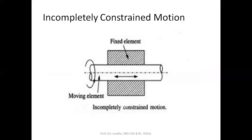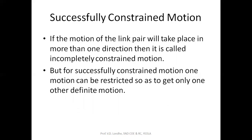Second is incompletely constrained motion. Here there is a shaft (moving element) and a fixed element. As the shaft rotates, there will be two motions — one rotating and another translating or sliding. Such motion where more than one motion exists is called incompletely constrained motion. Third is successfully constrained motion: as seen in incompletely constrained motion, the motion takes place in more than one direction. By providing some restriction in the system, we can reduce that motion from two directions to one. Such motion, achieved by putting some restriction, is called successfully constrained motion.